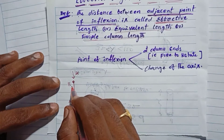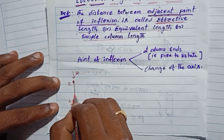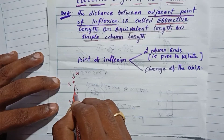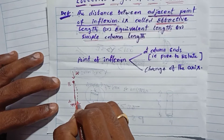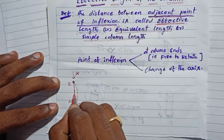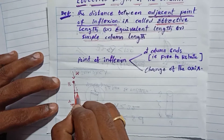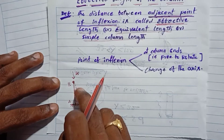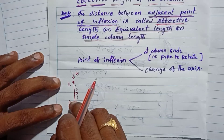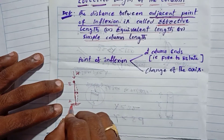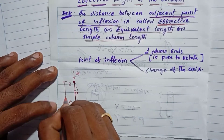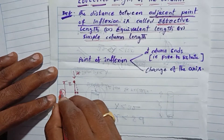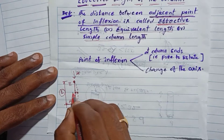Buckling is nothing but lateral displacement — the column displaces laterally perpendicular to its length. This lateral displacement is the same as buckling failure. When the total length of the column is considered, the column is subject to this failure.